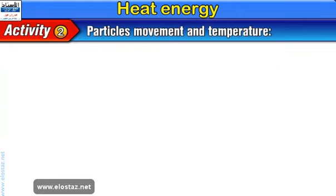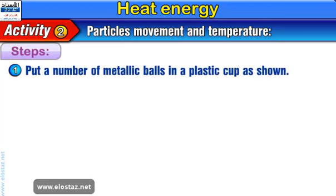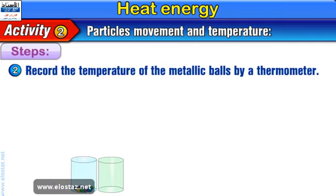Activity 2: Particles movement and temperature. Steps. 1: Put a number of metallic balls in a plastic cup, as shown. 2: Record the temperature of the metallic balls by a thermometer.